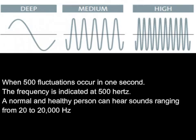When 500 fluctuations occur in one second, the frequency is indicated at 500 Hertz. A normal and healthy person can hear sounds ranging from 20 to 20,000 Hertz.